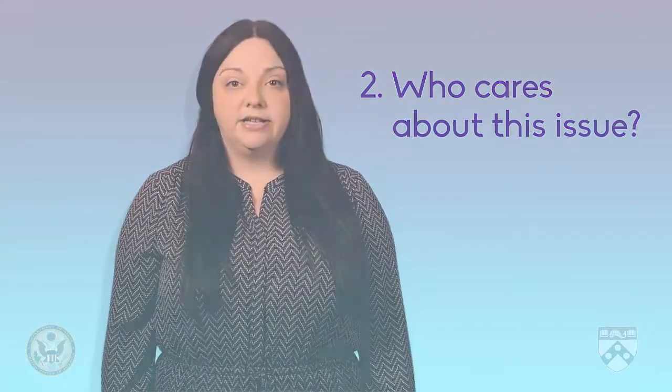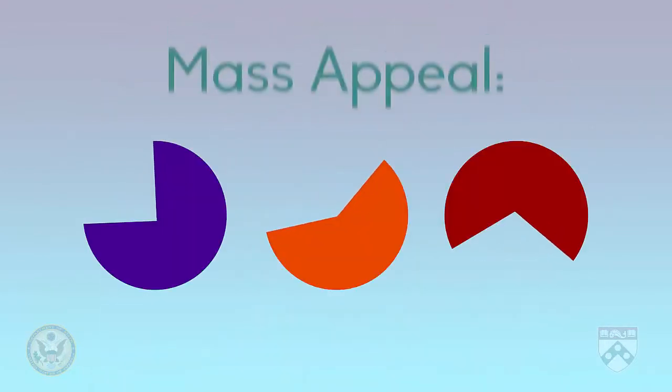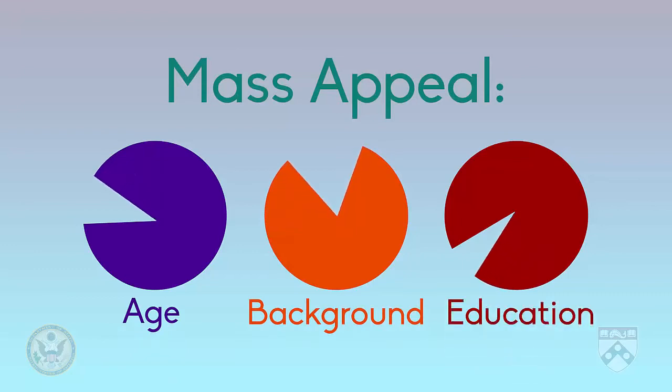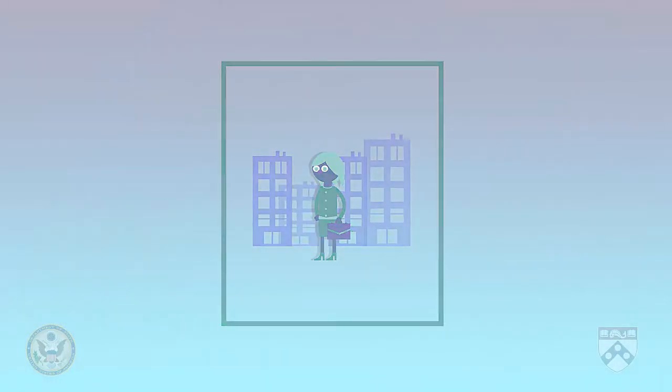The second question a journalist must answer in a pitch is: who cares about this issue? This relates to the idea of a target audience. A newspaper should have mass appeal, meaning citizens of all ages, backgrounds, and levels of education should be interested in at least some of the articles published. But for magazines, the readers have much more specific traits. For example, a magazine may target women who live in cities and have professional jobs. In the pitch, the journalist should be able to identify who, in particular, would be interested in this story.